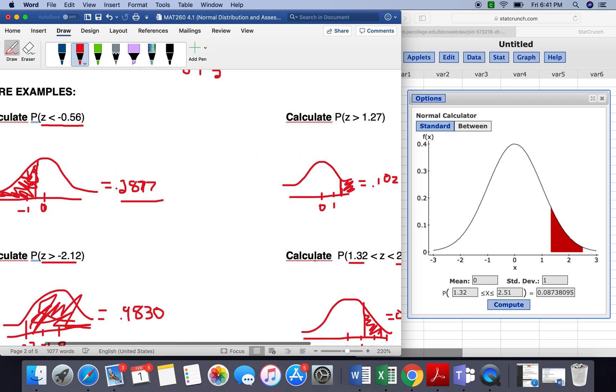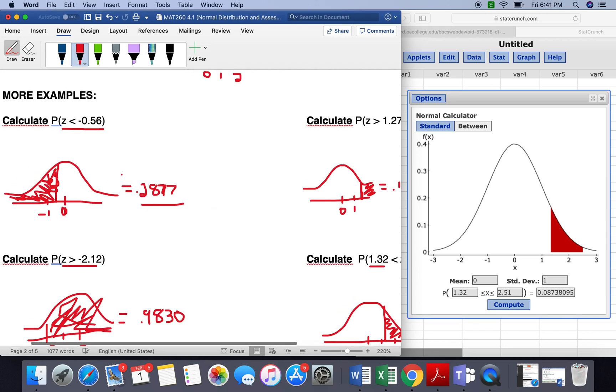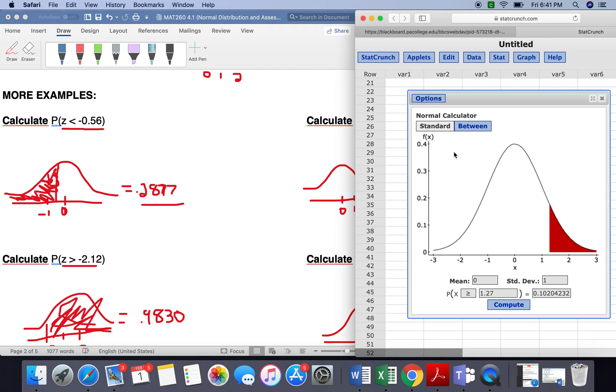So that is how you solve all the different types of areas under the standard normal curve in StatCrunch. So make sure for less than or equal to, you use the standard and change to whichever one is less than or greater than.